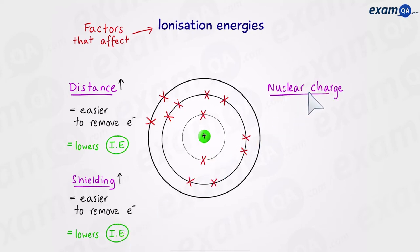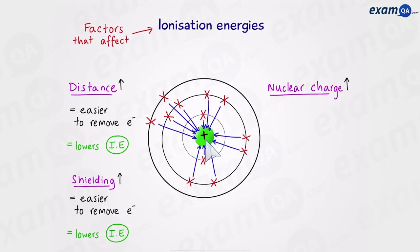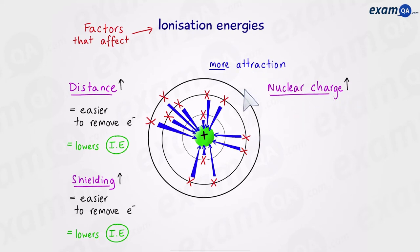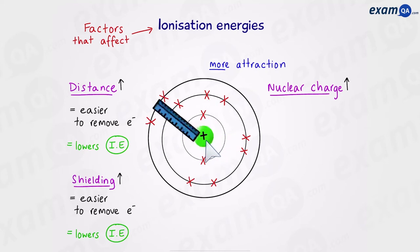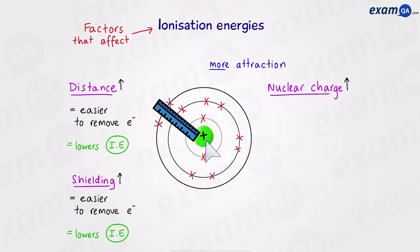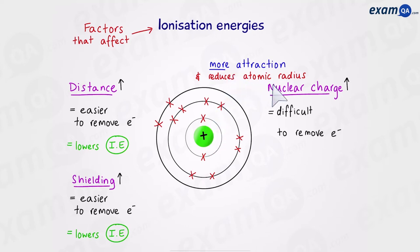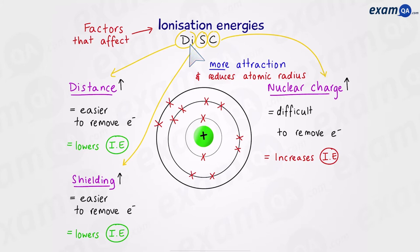The third factor is nuclear charge. All electrons are attracted to a positively charged nucleus. If an atom has more protons in its nucleus, the nuclear charge increases, and there will be more attraction between the electrons and the nucleus. Also, this nucleus will pull all the electrons inwards, reducing the atomic radius. Both a stronger attraction and a smaller atomic radius make it more difficult to remove the outermost electron, increasing the ionization energy. We can refer to these three factors as DISC: distance, shielding, and nuclear charge.